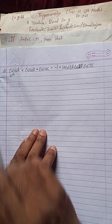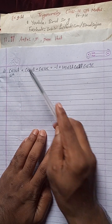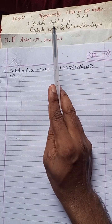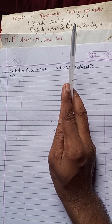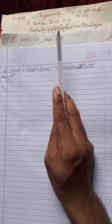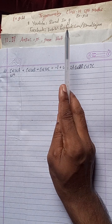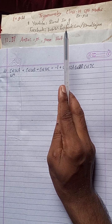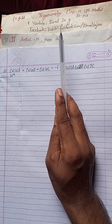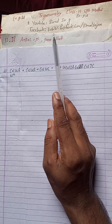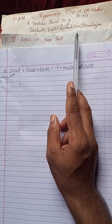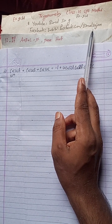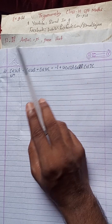Hi everybody, welcome back to Bimal Sarji's YouTube channel. This is question number 2LD of Exercise 9.4, Trigonometry chapter, Class 10 OPT Mathematics. You can check the playlist of Bimal Sarji's YouTube channel — Class 9 and 10 students will get a lot of solutions for OPT Maths, compulsory maths, science, reasoning, and many more. Follow the Facebook page BIMALSAJAN to get updates of newly uploaded videos.